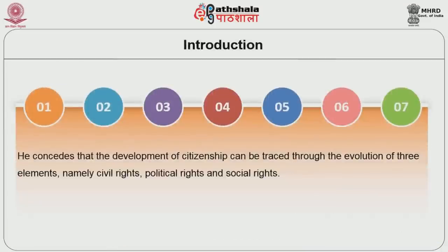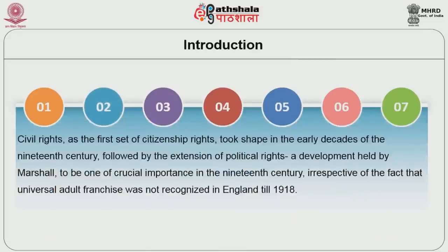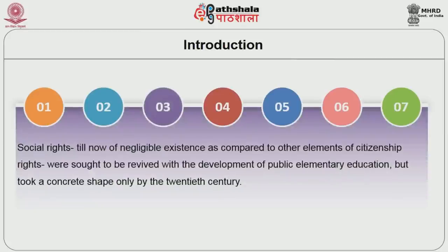He concedes that the development of citizenship can be traced through the evolution of three elements, namely civil rights, political rights and social rights. Civil rights as the first set of citizenship rights took shape in the early decades of the 19th century, followed by the extension of political rights, a development held by Marshall to be of crucial importance in the 19th century, irrespective of the fact that universal adult franchise was not recognized in England till 1918. Social rights, till now of negligible existence, were sought to be revived with the development of public elementary education, but took a concrete shape only by the 20th century.